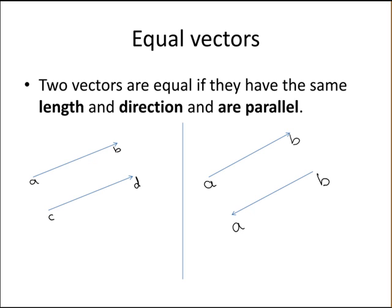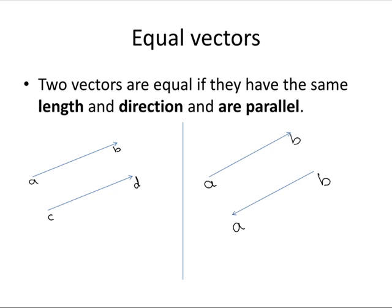So when are two vectors equal? Two vectors are equal if they have the same length and direction and they're parallel.